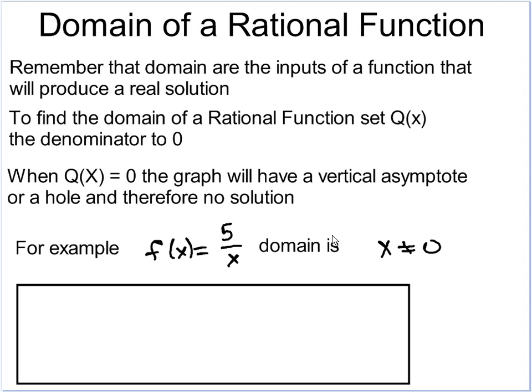So let's take an example and look at it. Here, f(x) = 5 / x. So my domain is x cannot equal zero. Every other number will work. The only one that will not work is exactly zero.